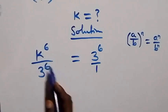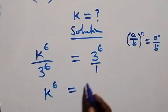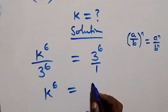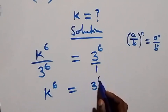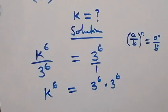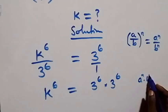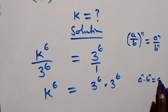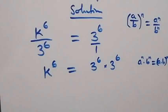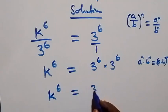Then cross multiply here: k raised to power 6 equals k raised to power 6. Then equals to 3 raised to power 6, giving us 3 raised to power 6. Then we can also apply the law of indices: from a raised to power n times b raised to power n, which is equal to (a times b) raised to power n. From here, it implies we have k raised to power 6 equals to (3 times 3) raised to power 6.